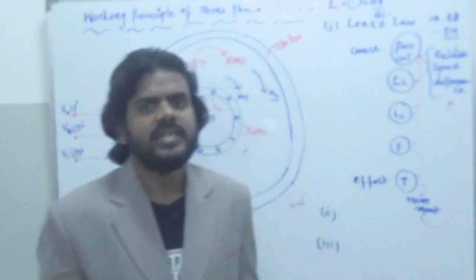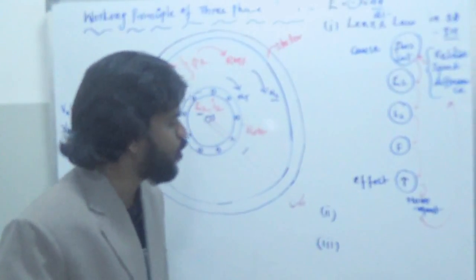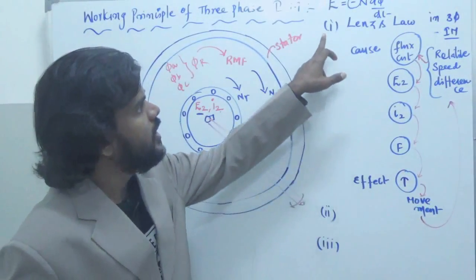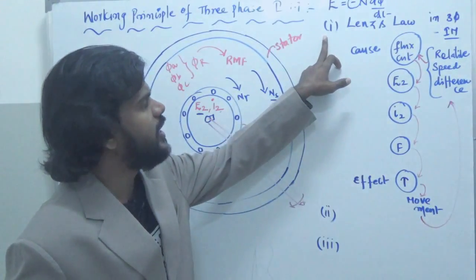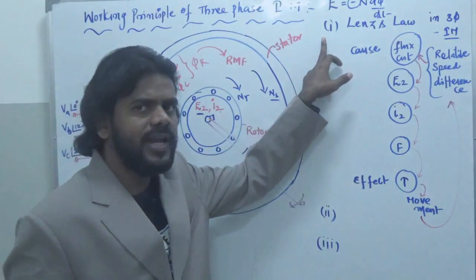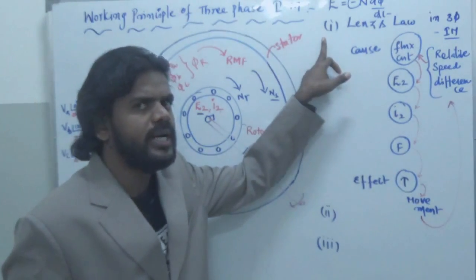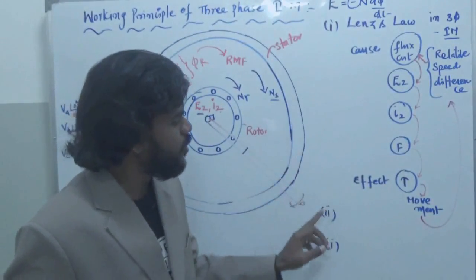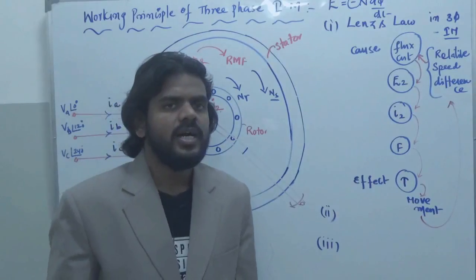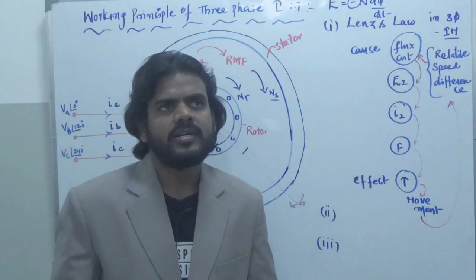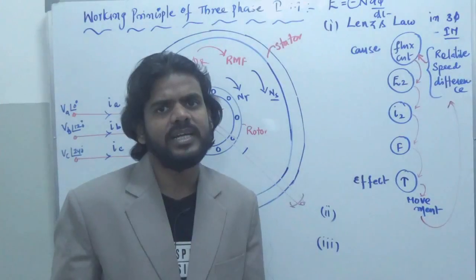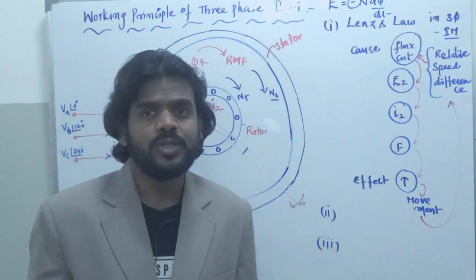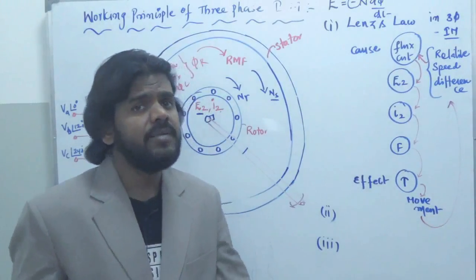Today we'll be seeing the third point. In the last video lecture I discussed the effect of Lenz's law in induction motor working principle — how Lenz's law is satisfied in the induction motor. The second point was about what happens if the induction motor runs at synchronous speed. The third point I'm going to discuss now is about why the induction motor cannot run at synchronous speed.